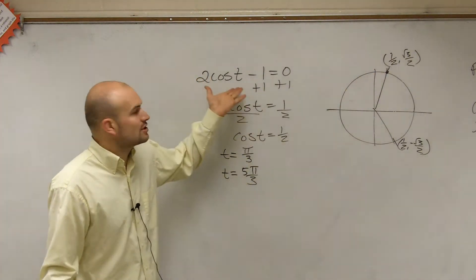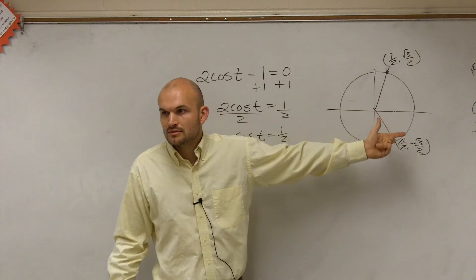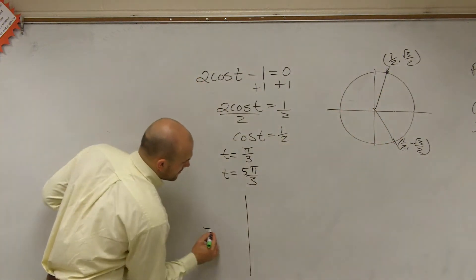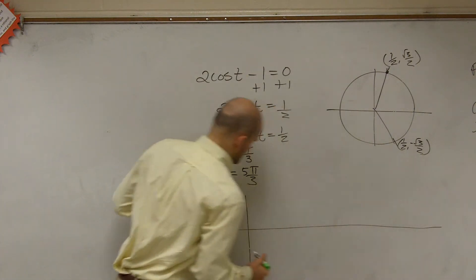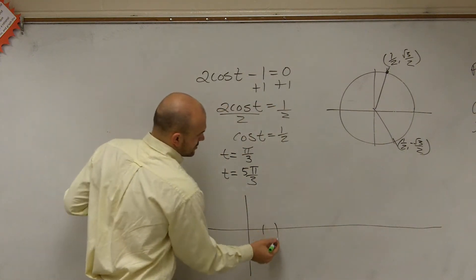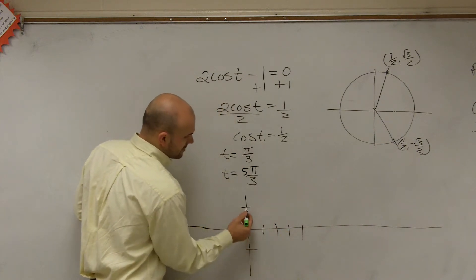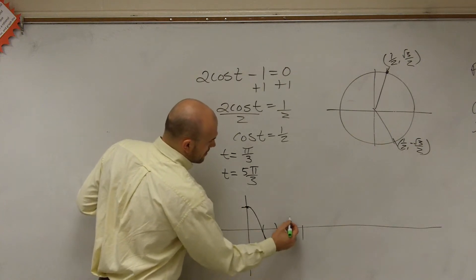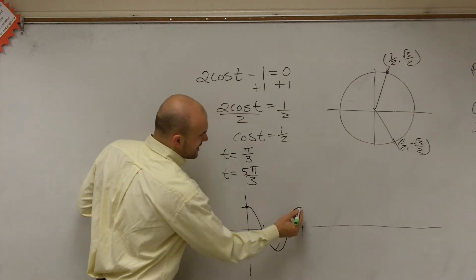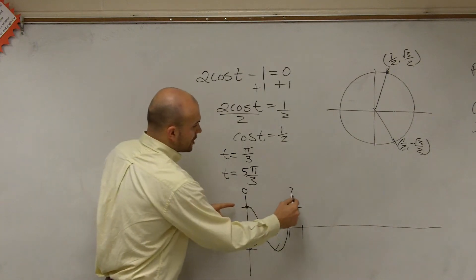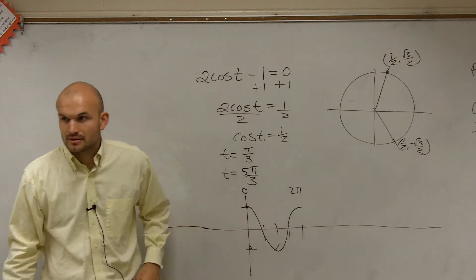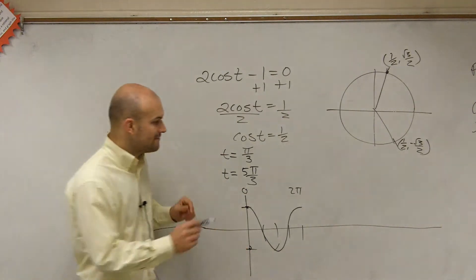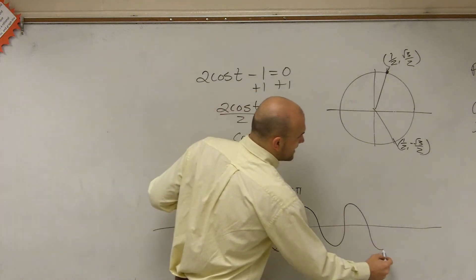But ladies and gentlemen, does the cosine graph just go from 0 to 2π? No, it keeps on going on and on. Let's take a look at the cosine graph. The cosine graph goes up to positive 1 and down to negative 1. That interval from 0 to 2π is just one portion — but does this graph stop there? No, the graph continues going on and on.